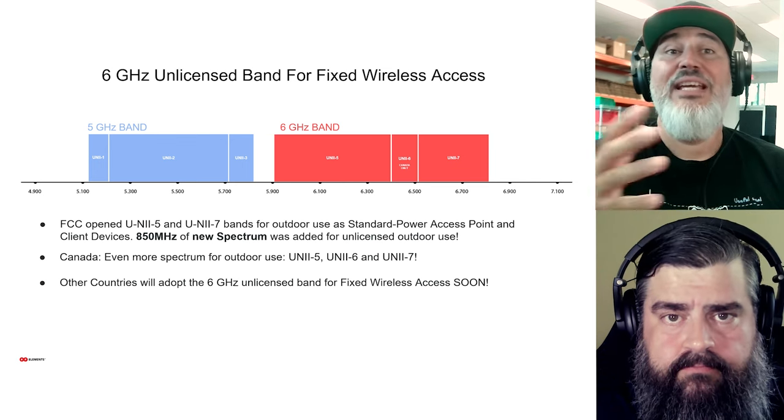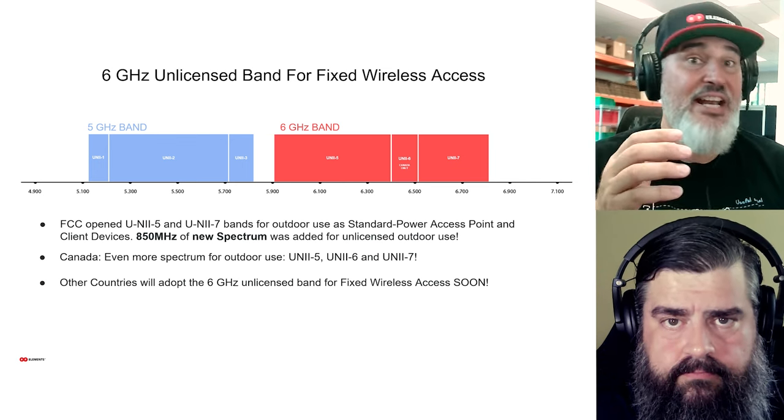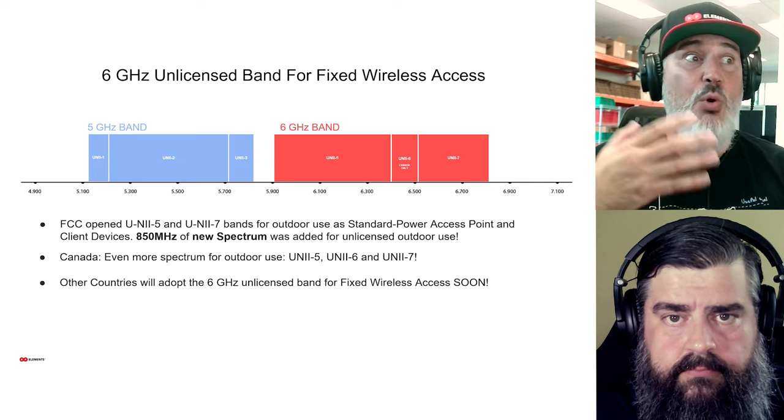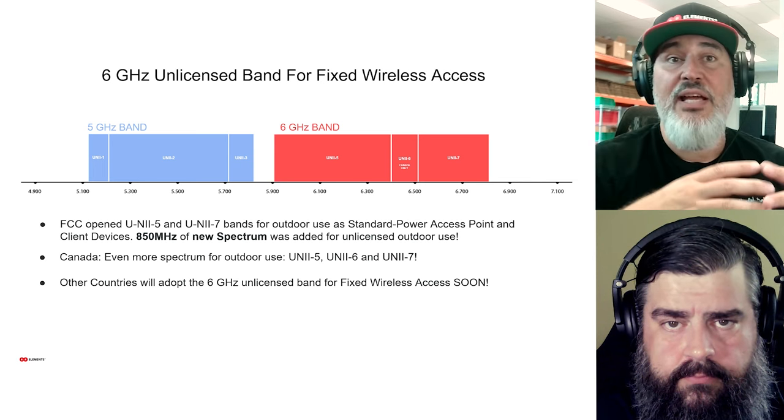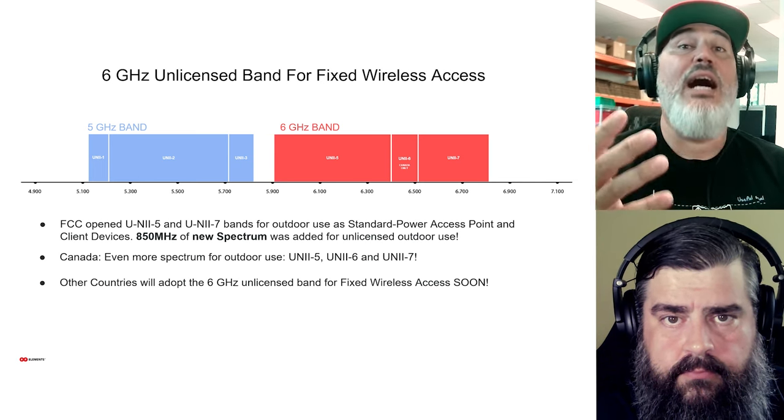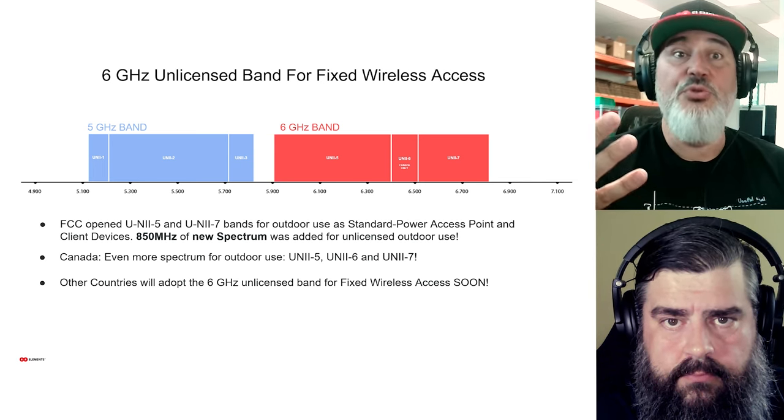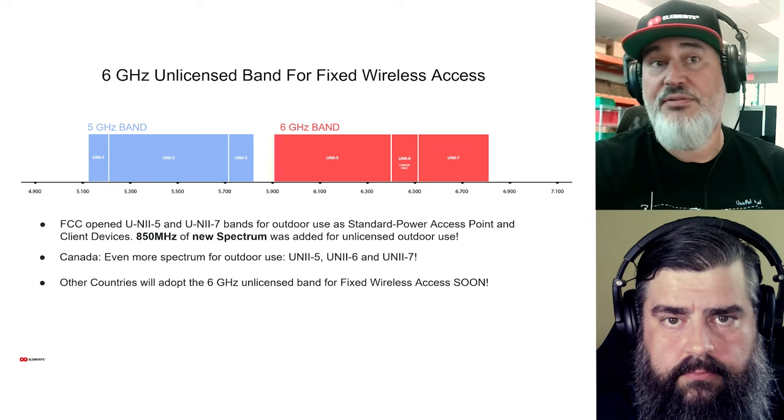This is about 850 megahertz of new spectrum that WISPs will be able to use in the United States. In Canada they opened up UNI-6, which is even more spectrum, and hopefully the rest of the world will adopt some of these changes as well. There's a ton of free spectrum — 850 to 950 megahertz of open spectrum for WISPs to use for fixed wireless access outside, which is awesome.